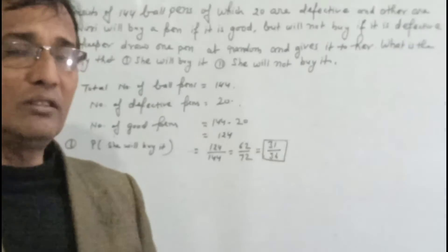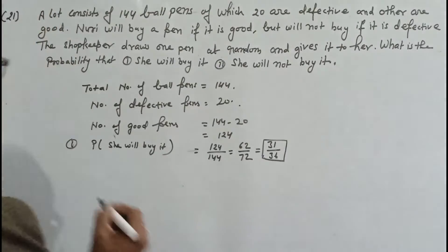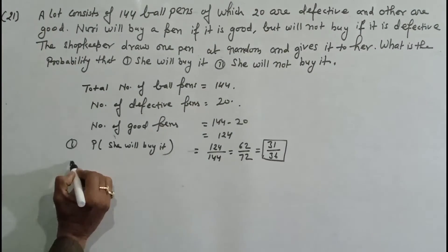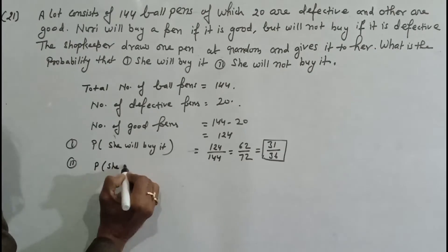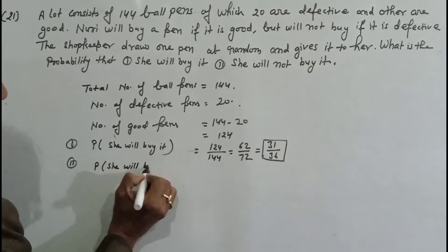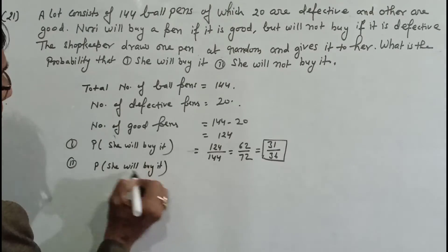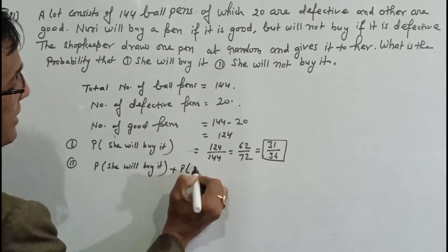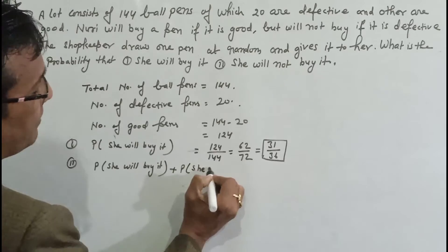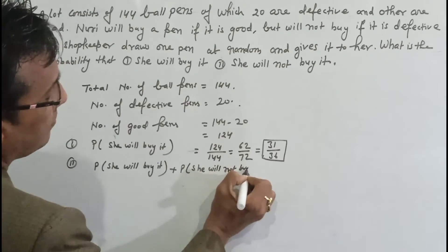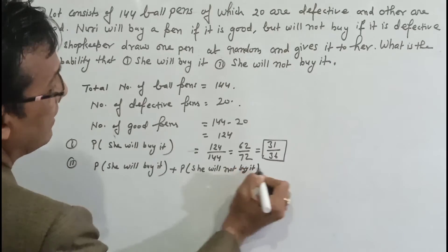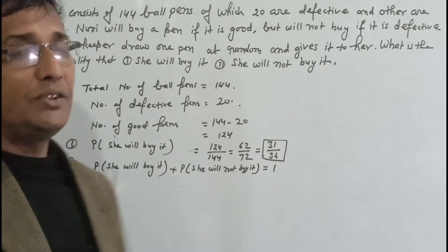Next step, second probability. She will not buy it. Probability she will not buy it equal to 1 minus probability she will buy it.